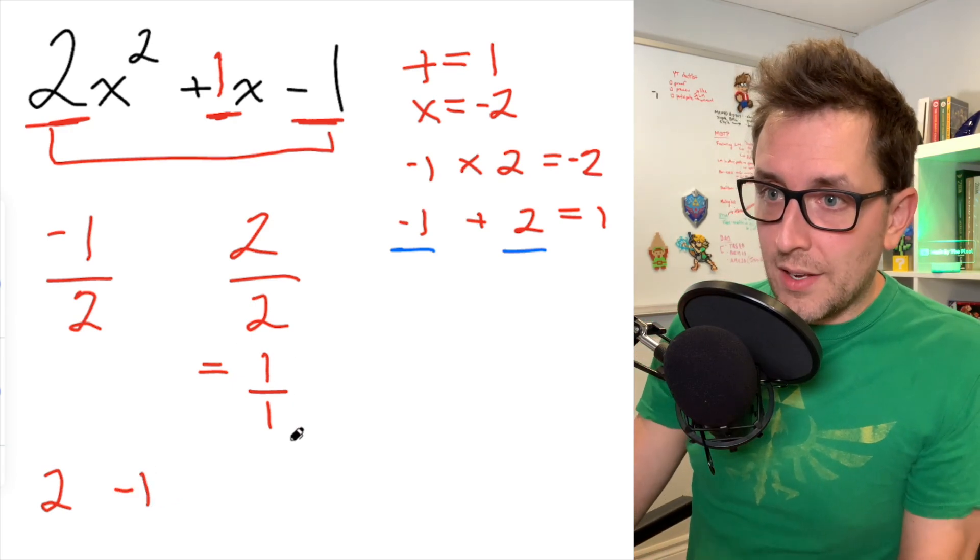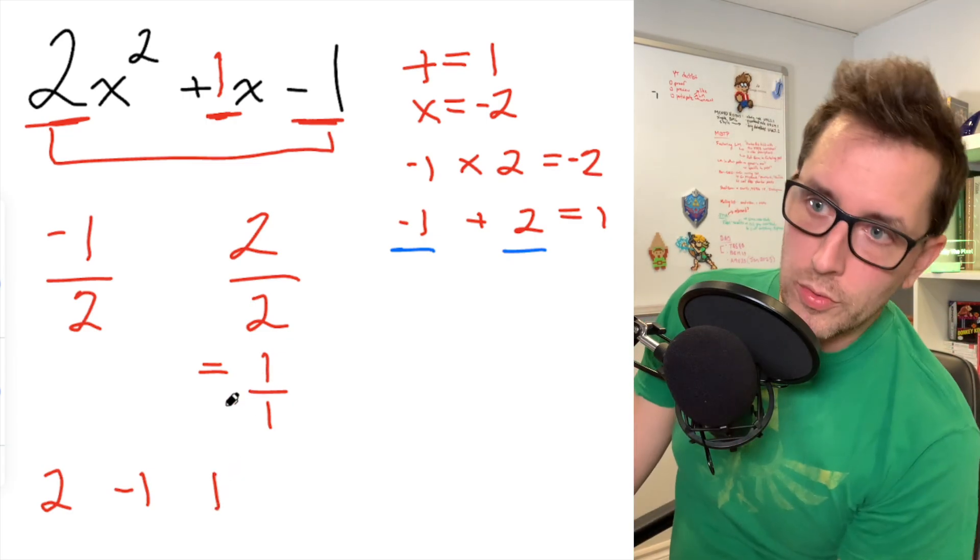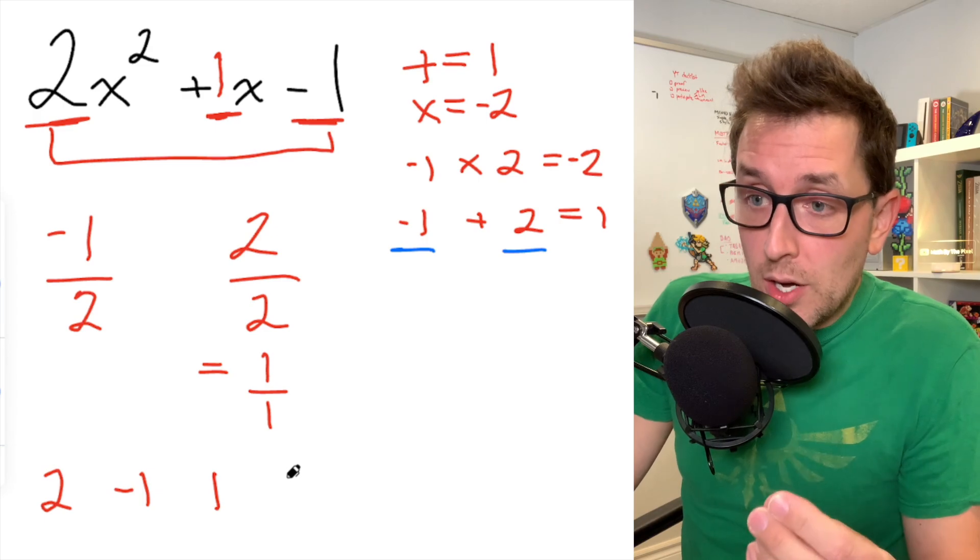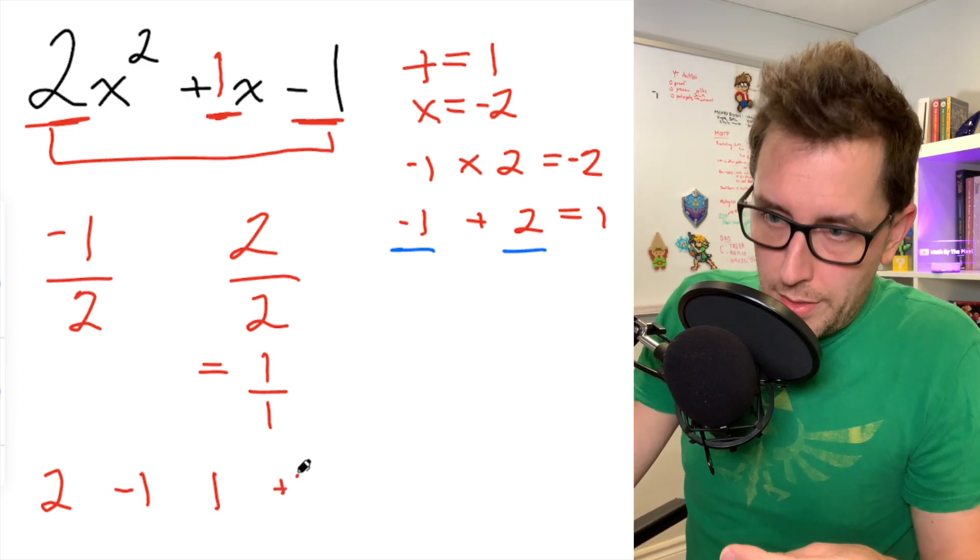We're going to do the same thing for the second fraction. The denominator of 1 is going to stay where it is. We're going to tip over the numerator of 1. It's going to land next to the denominator of 1. And since that 1 is positive, we're going to bring the positive with it. What have we done here? All we've done is created two random pairs of numbers.